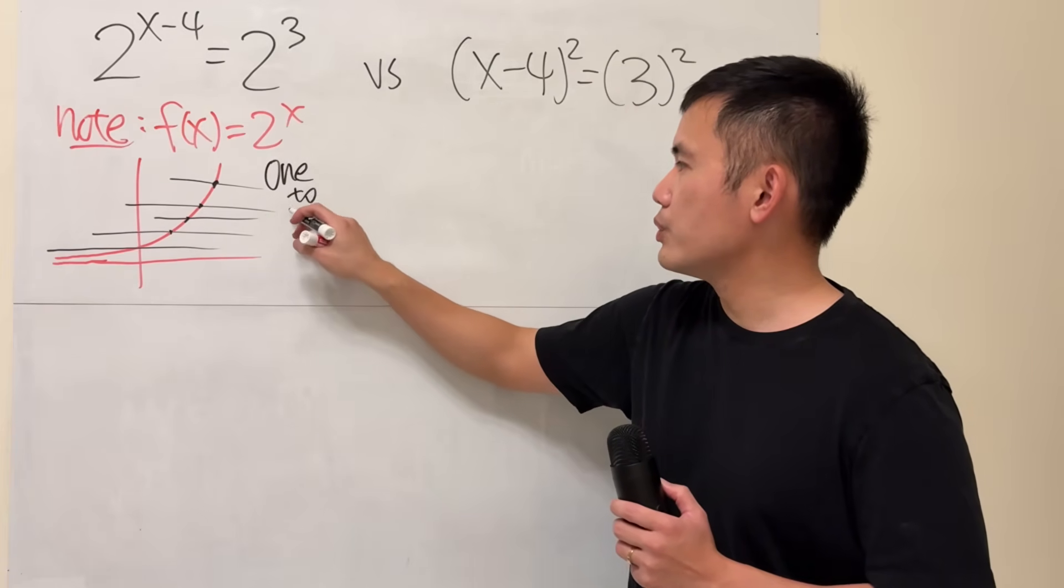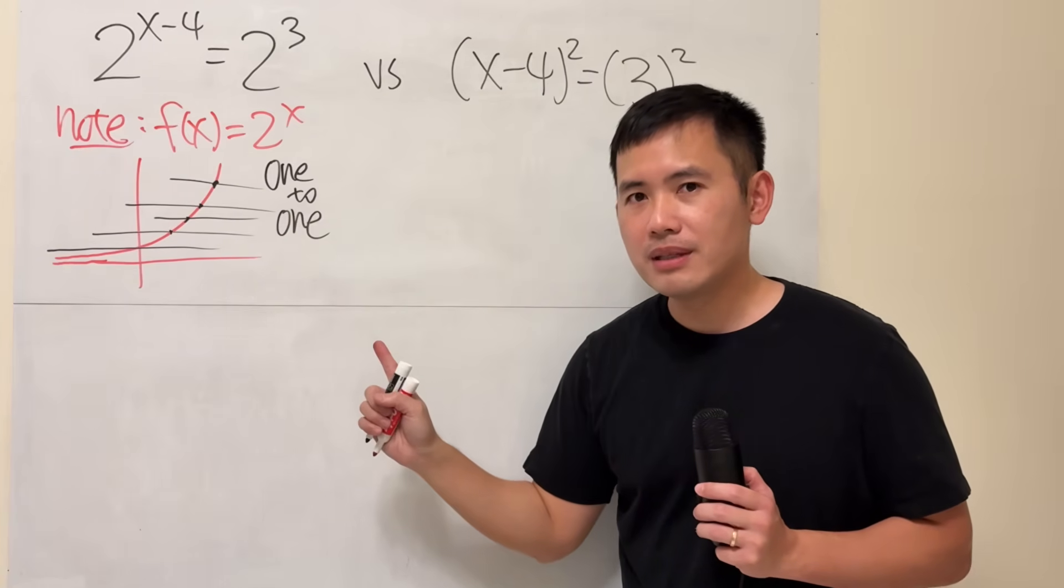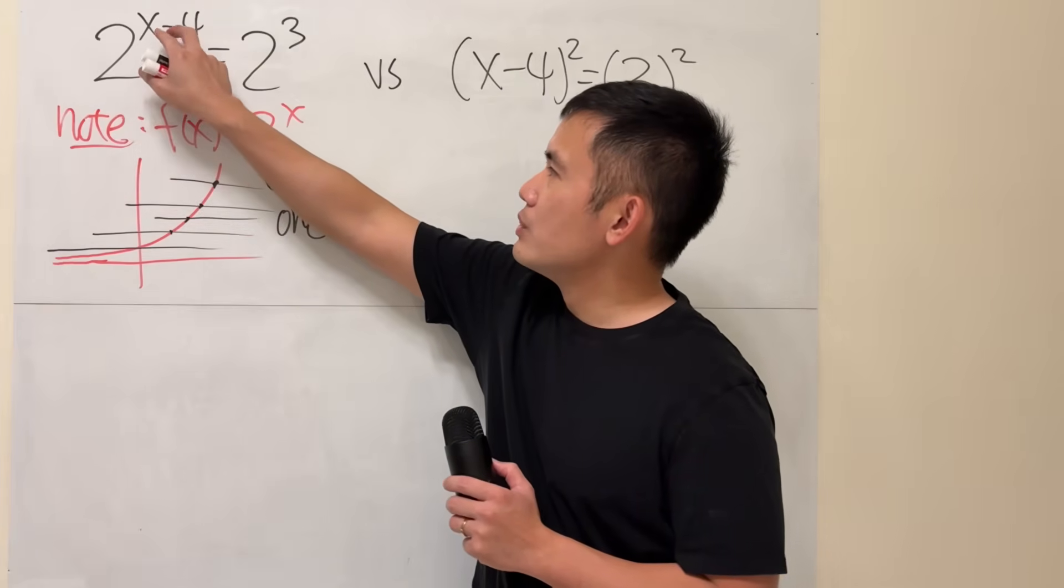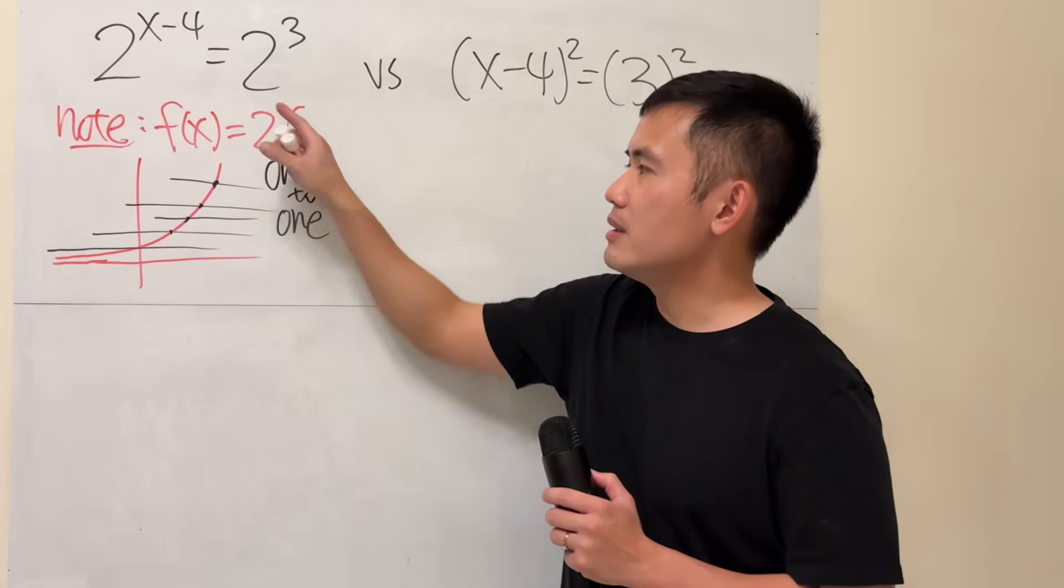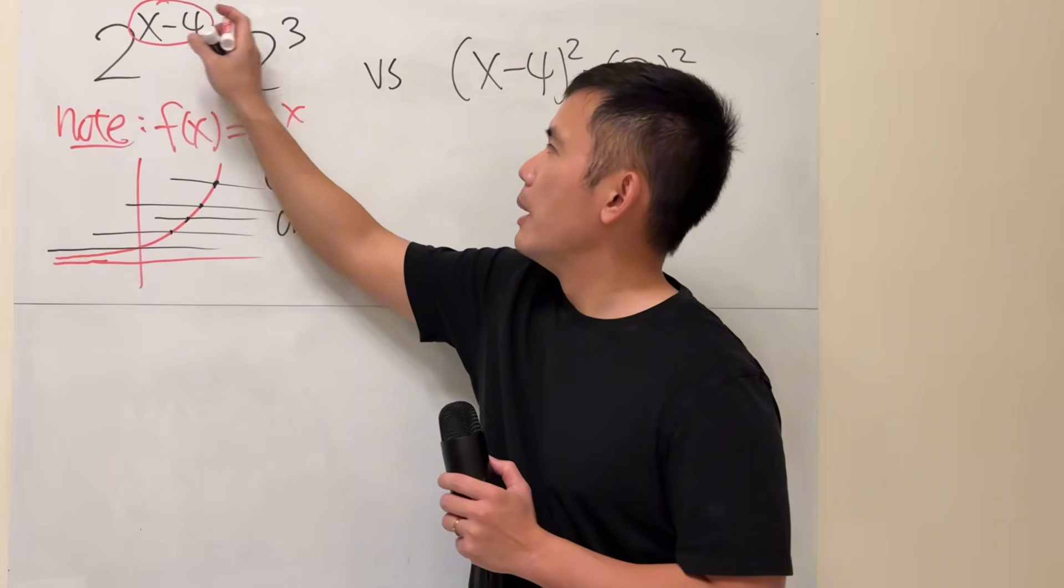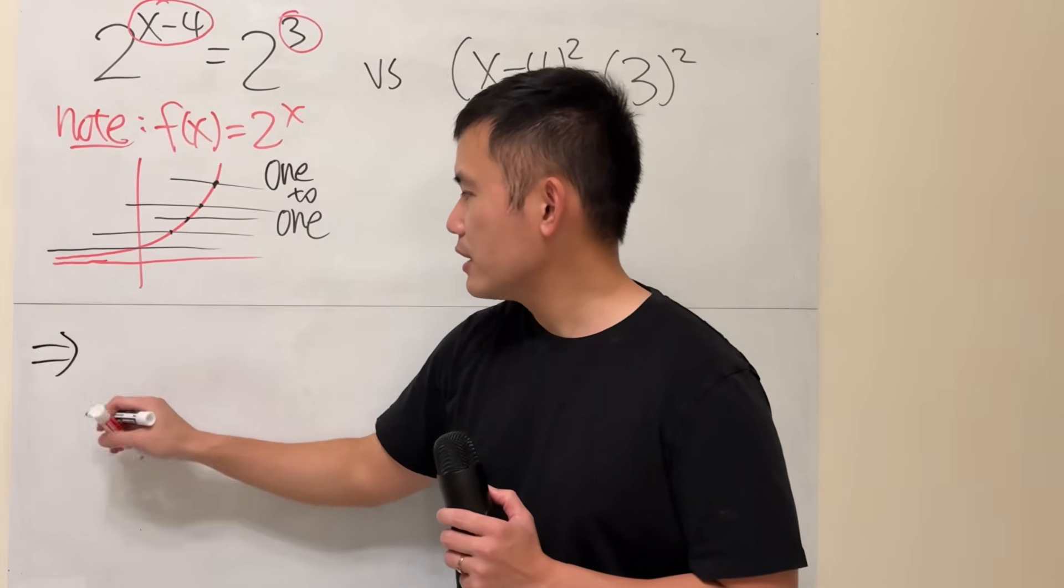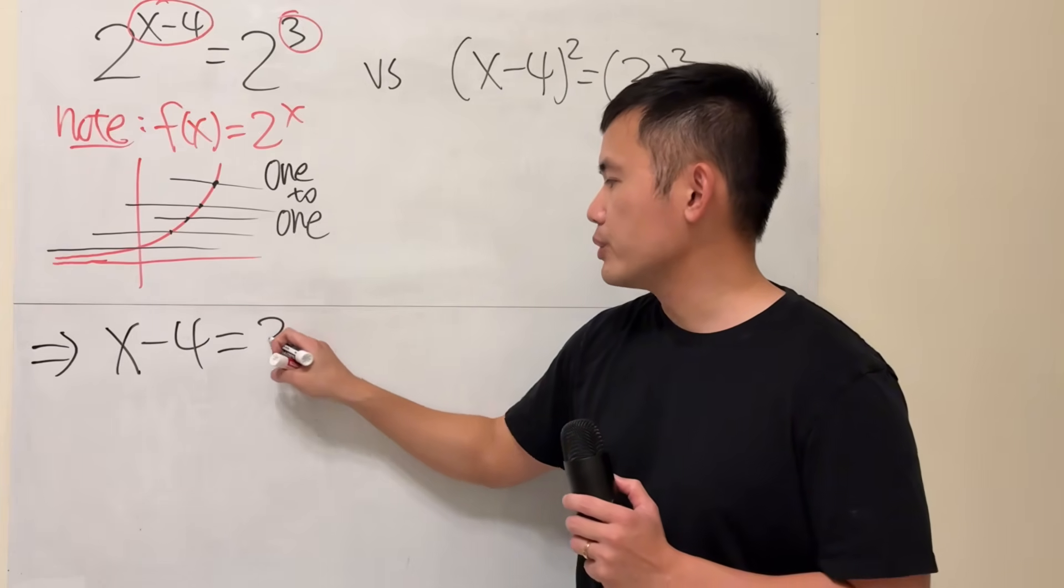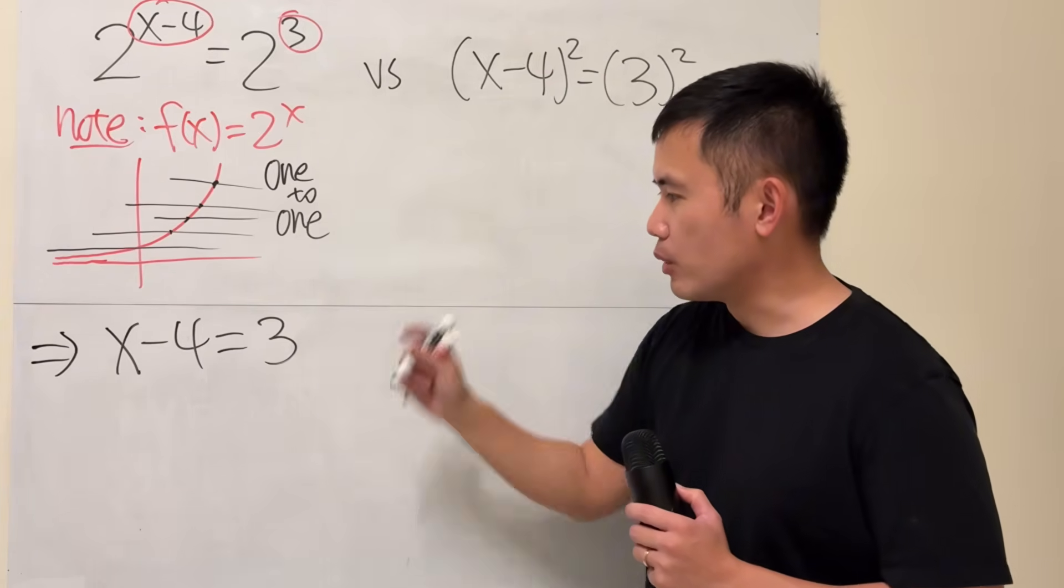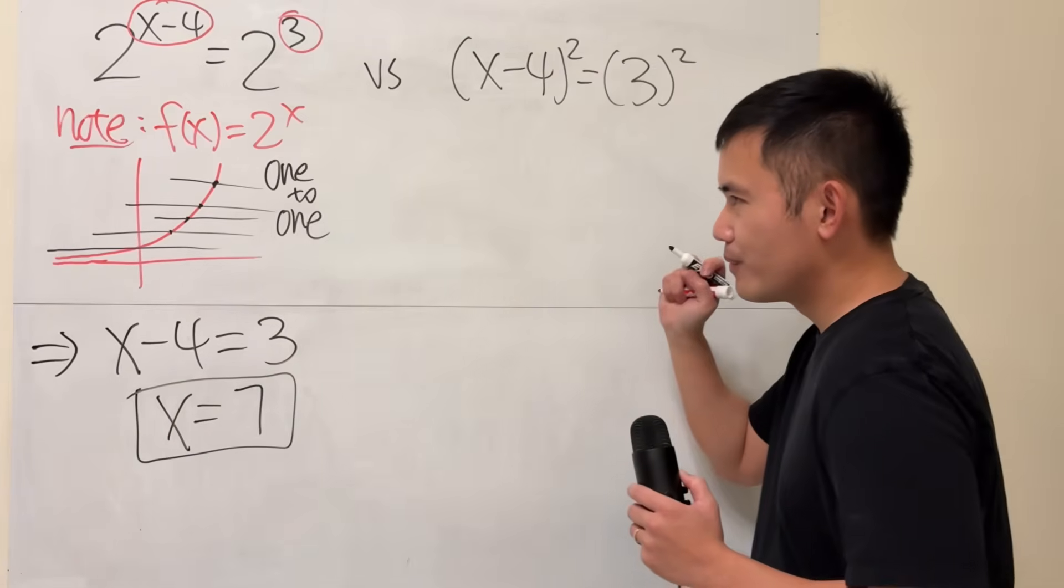One to one. Now, if this happens, then we can do the following. If this to the power is equal to this to the power and it's a one-to-one function, all we have to make sure is the input being equal to each other. So we can just go ahead and focus x minus 4 being equal to 3, and then solve it by adding 4 to both sides. x is equal to 7. And we are done.